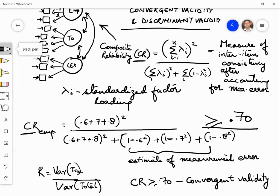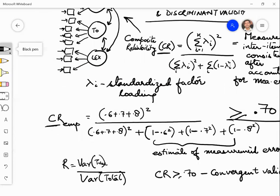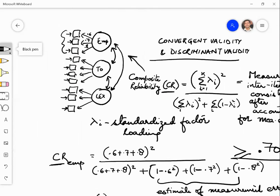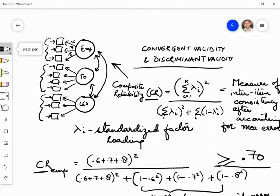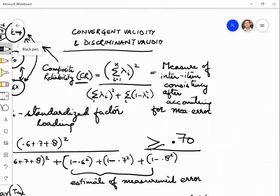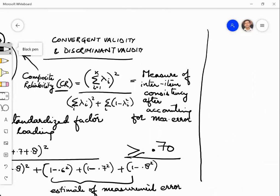Similarly, you will compute CR for TO and you will compute CR for LEX. This is the convergent validity computation. Then we have another.